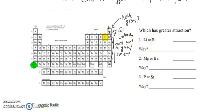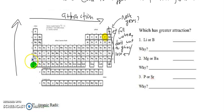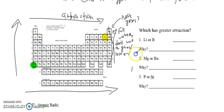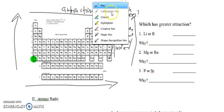So that gives us fluorine as the most attractive. Attraction is increasing this way — left to right — and attraction is also increasing upward because further down the electrons are so far away. So high attraction from left to right and high attraction in the top corner. Question: what has the greater attraction, lithium or boron?